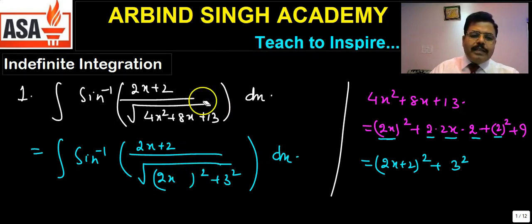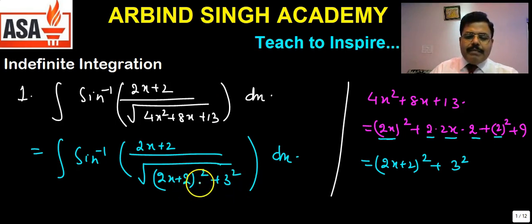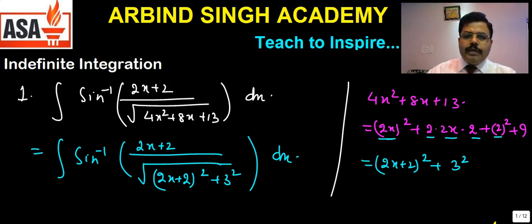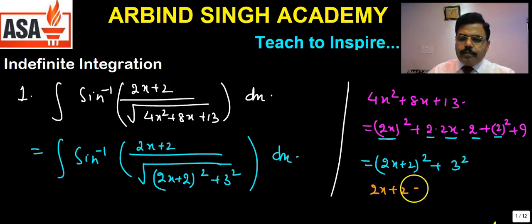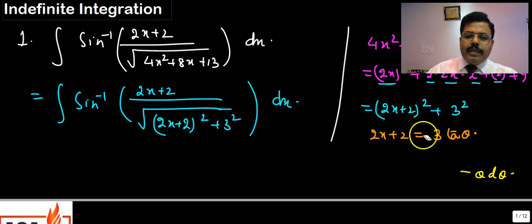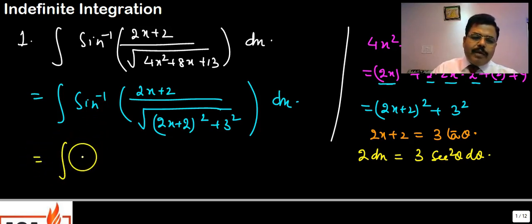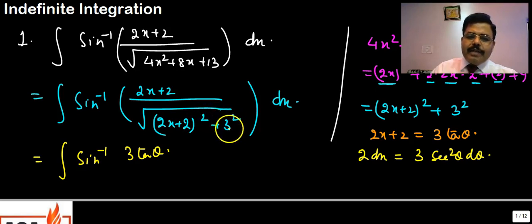Now, if we take 2x+2 as 3secθ, then 3²sec²θ + 1 would come. Instead, let us assume 2x+2 = 3tanθ. With this substitution, (2x+2)² + 3² becomes 3²tan²θ + 3² = 3²(tan²θ+1) = 3²sec²θ, so the square root becomes 3secθ. The 3s cancel out.